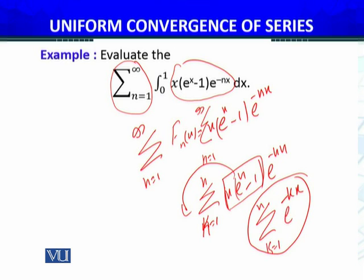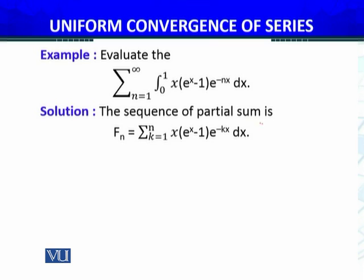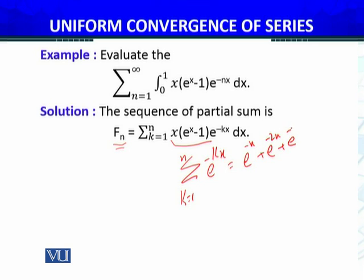What I want to do is show this series to be uniformly convergent. Until I can show this series of functions is uniformly convergent, I cannot apply the term-by-term integration result. The sequence of partial sum f_n equals summation k=1 to n of x · e^(x-1) · e^(-kx). Taking x outside, this becomes x · e^(x-1) times summation k=1 to n of e^(-kx), which opens as e^(-x) + e^(-2x) + e^(-3x) + ... + e^(-nx).